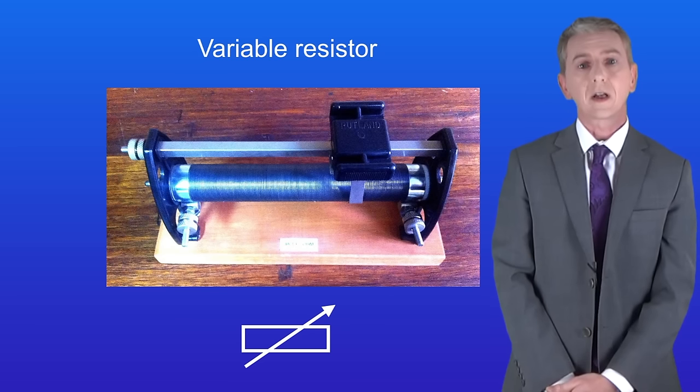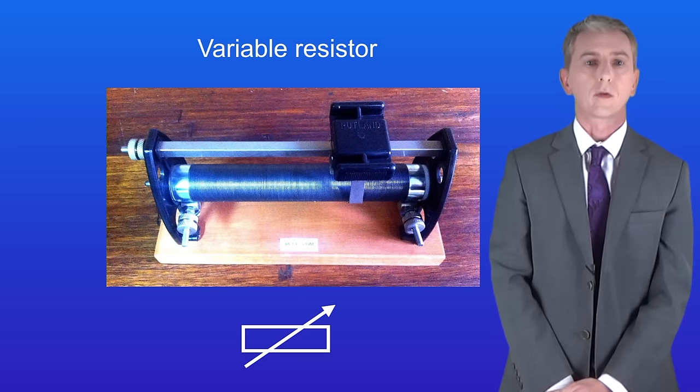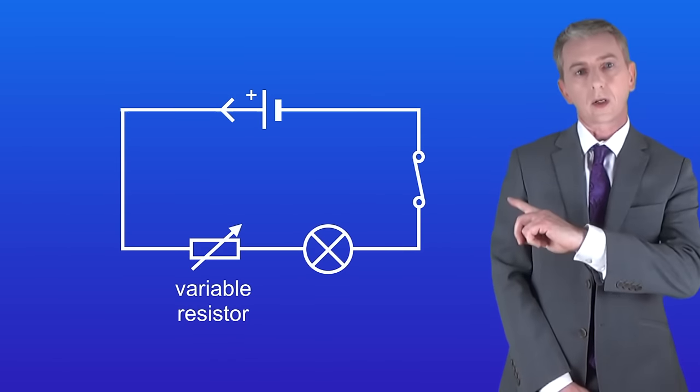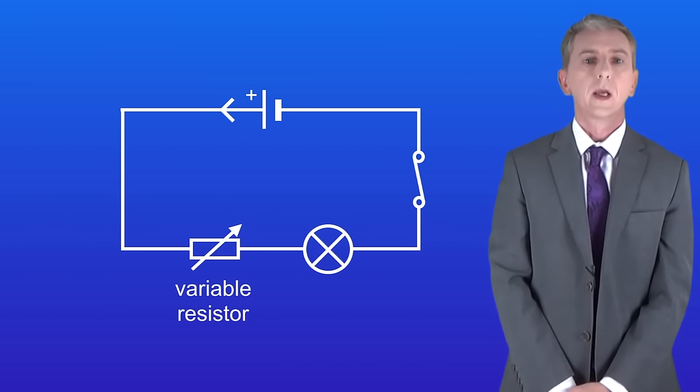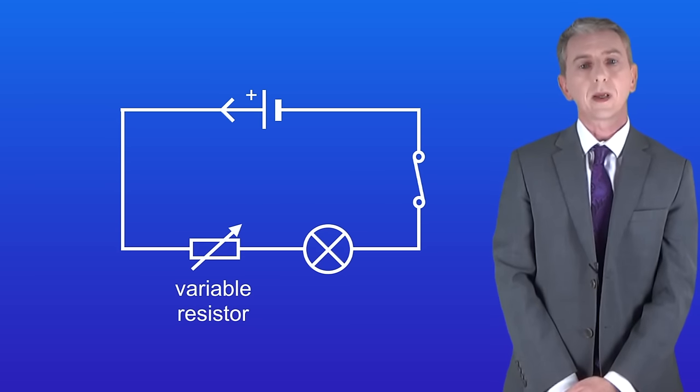Using the slider, we can change the length of the wire that the current runs through. So in this circuit, we're using a variable resistor to control the potential difference across the lamp. By increasing the resistance, we can make the lamp dimmer.